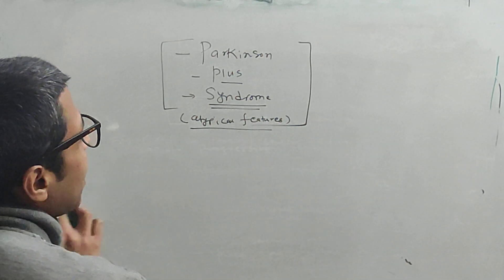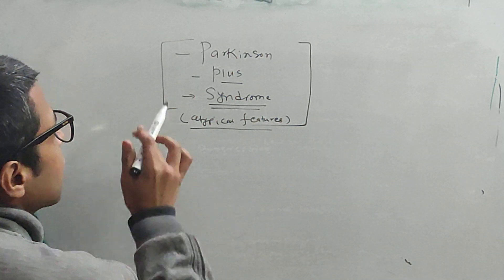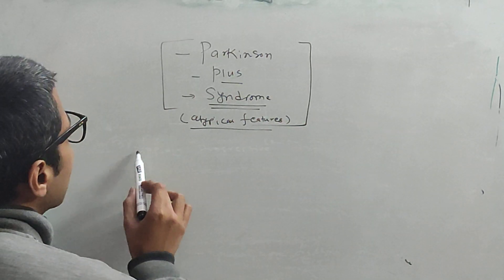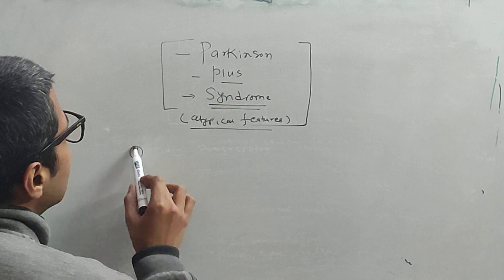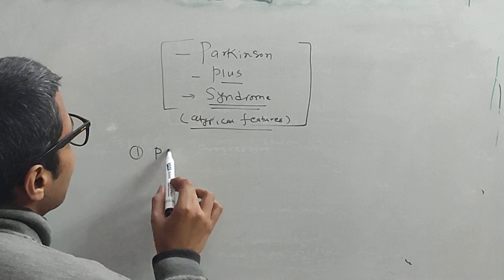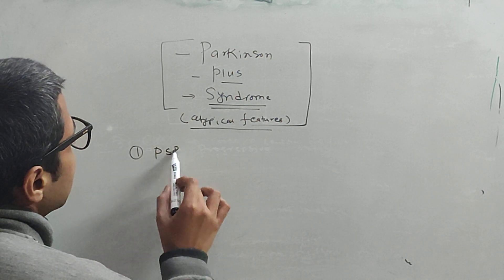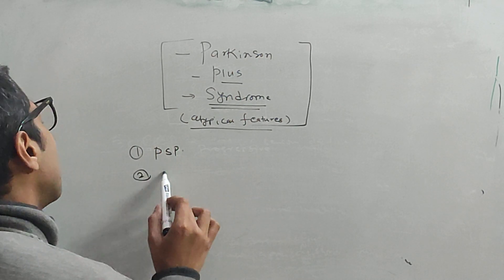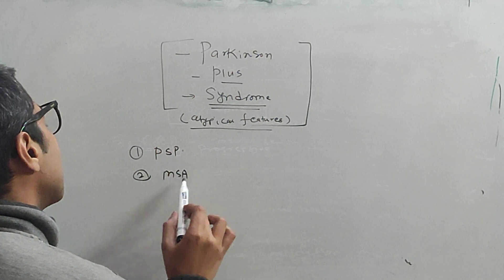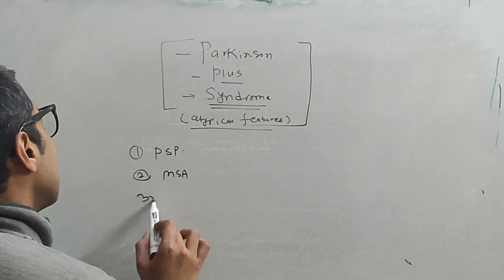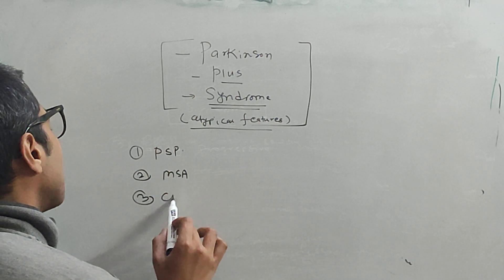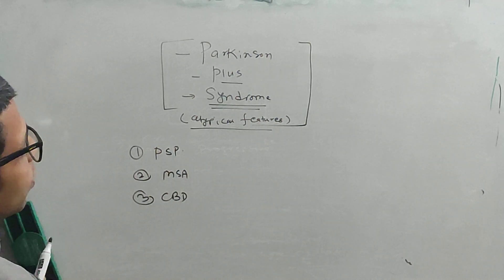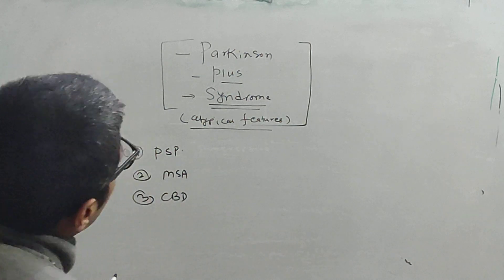What are the diseases that fall under this umbrella of Parkinson's Plus Syndrome? The first is Progressive Supranuclear Palsy. The second is Multiple System Atrophy. The third is Corticobasal Degeneration.